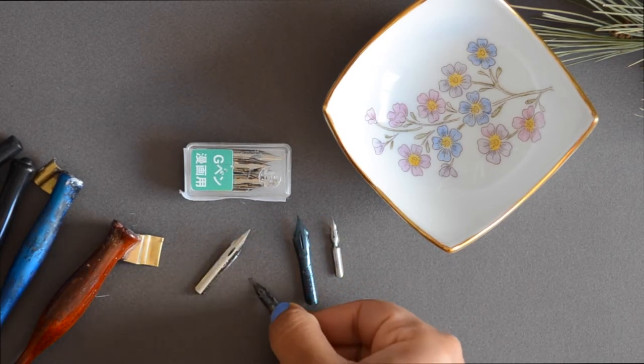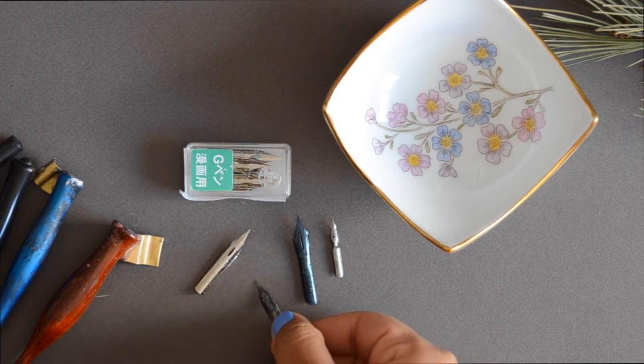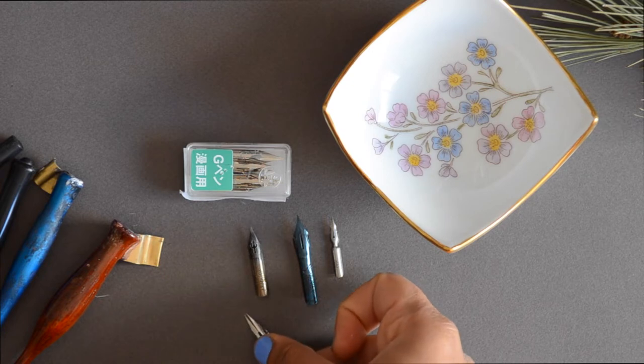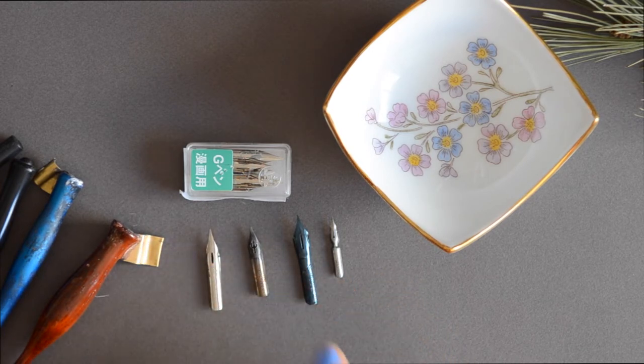There are two main ways that nibs differ: in the size of the hairlines they produce and in their flexibility. So how easy it is to produce those thick swells.